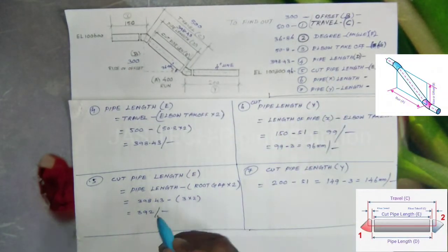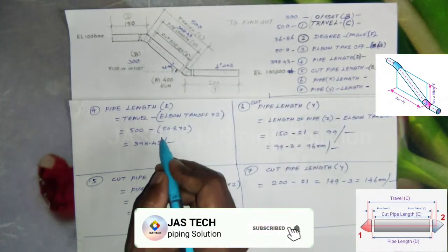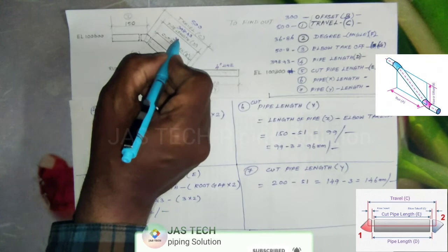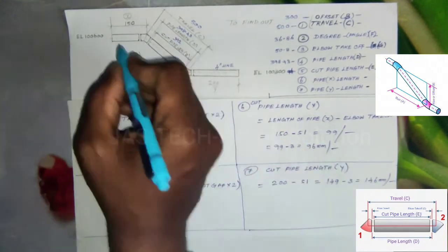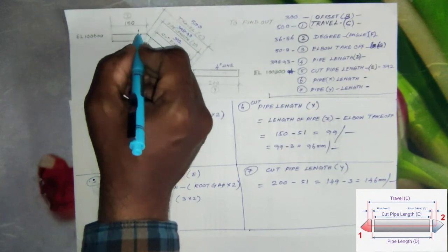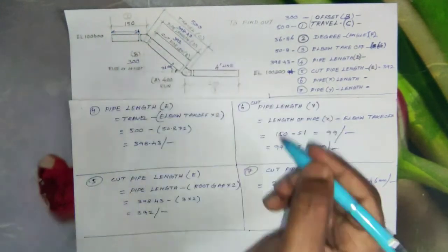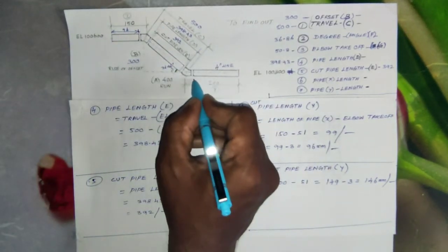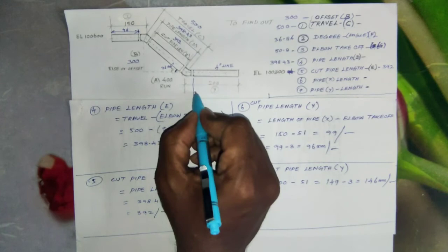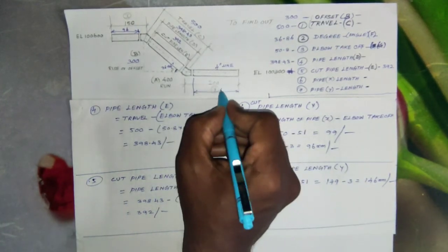96 for X pipe length, Y pipe length 146. 96 from pipe length 2 up to the root gap. 96 for X, 146 for Y cutting pipe length.